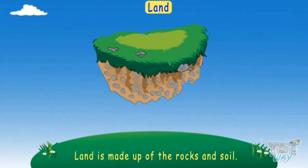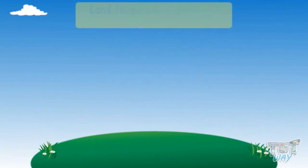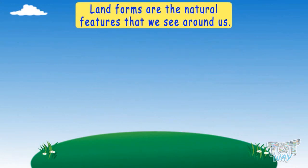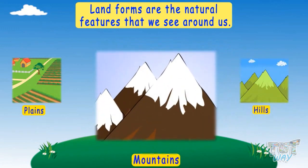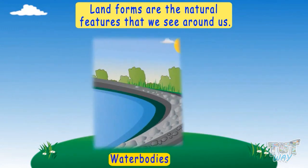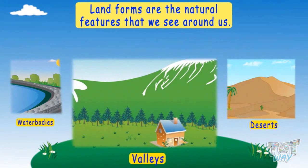The land is made up of rocks and soil. Now let's see different landforms. Landforms are the natural features that we see around us. Different landforms are plains, hills, mountains, water bodies, deserts, and valleys. Now let's learn about different types of landforms one by one.